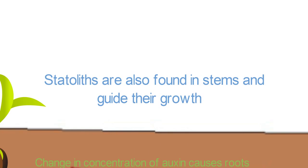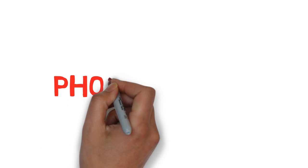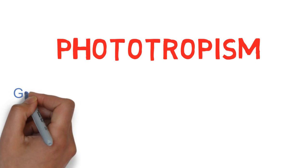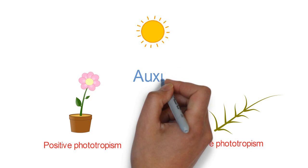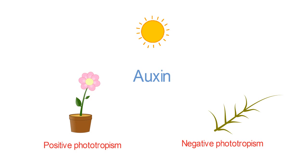But gravity is not the only thing which affects the direction of plant growth. There is another phenomenon called phototropism. It is the growth of an organism according to a light stimulus. It can cause a plant to grow towards light which is positive phototropism or it may cause growth away from light that is negative phototropism. Here also auxin plays an important role by changing the growth of cells according to light stimulus.